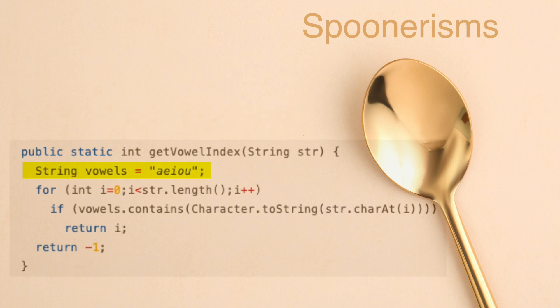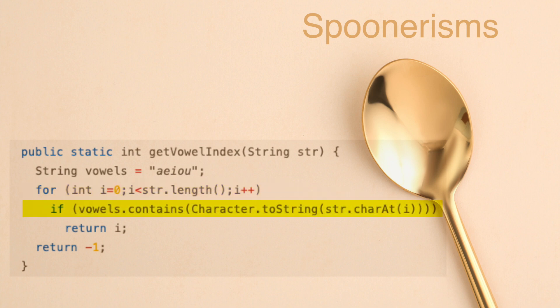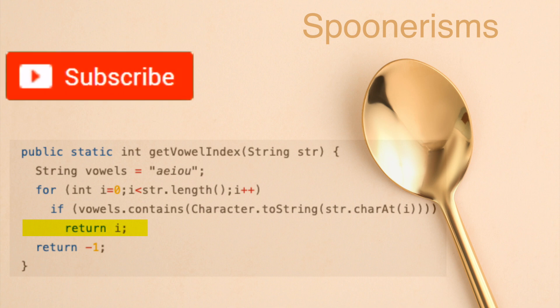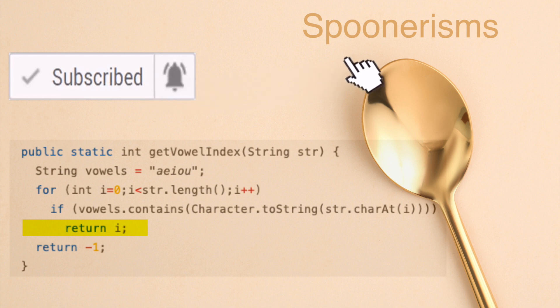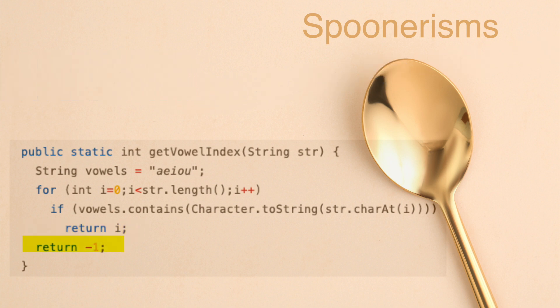Inside the getVowelIndex method, we initialize a string variable named vowels containing a list of valid vowels. Next, for each character in the incoming string, we determine if it is a vowel. If it is, we return the indexed value of the position of the vowel; otherwise, we continue traversing the string. If the loop completes, indicating a vowel was not found in the string, a negative 1 is returned to the calling method.